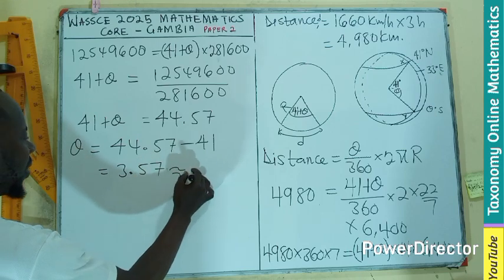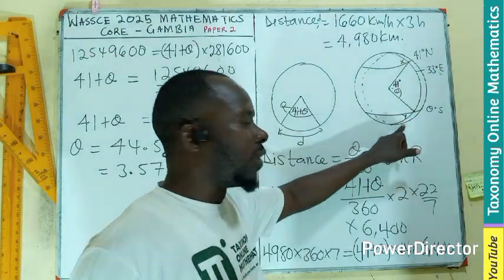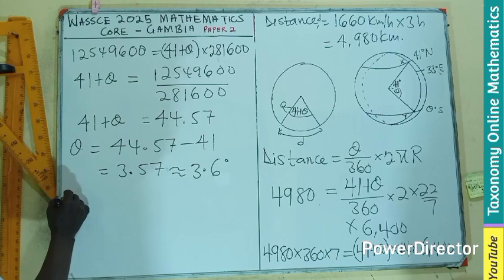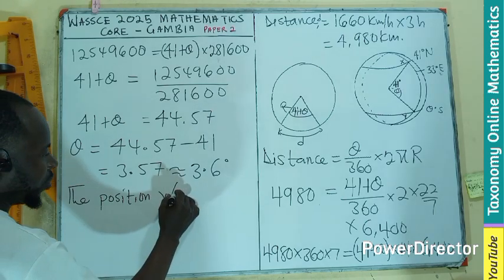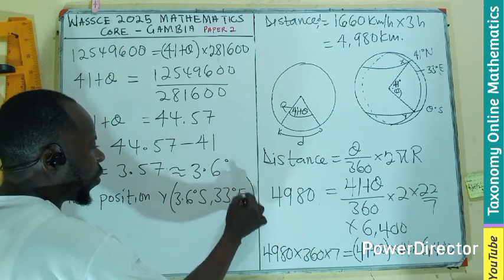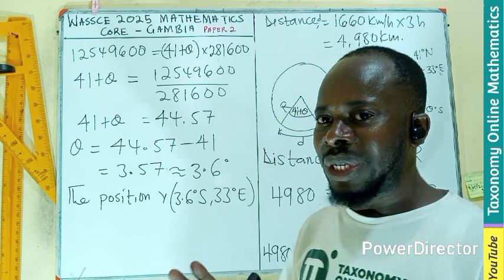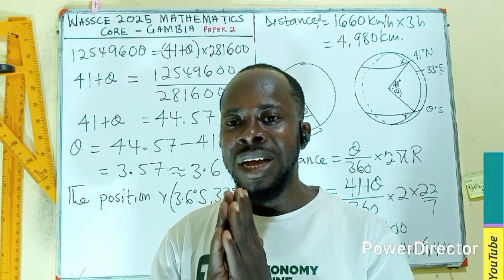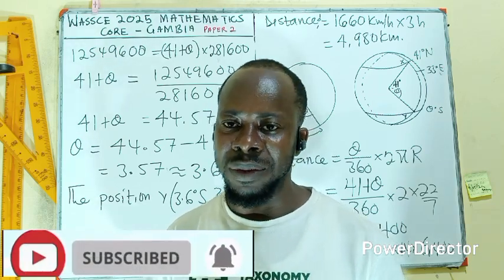So we approximate that to 3.6 degrees. This theta is on the same longitude, so the position Y is latitude 3.6 degrees south and still 33 degrees east on the longitude. This becomes the new position of the jet. You will get all the information you need when you check the playlist for Global Mathematics on Tazunomi Online Mathematics — you'll find it quickly on YouTube. Like the video, share, subscribe if you haven't, and come back for the next question. Thank you.